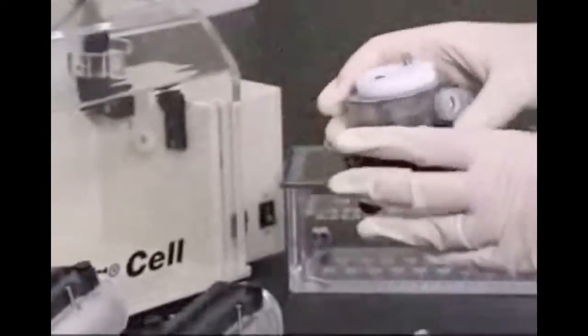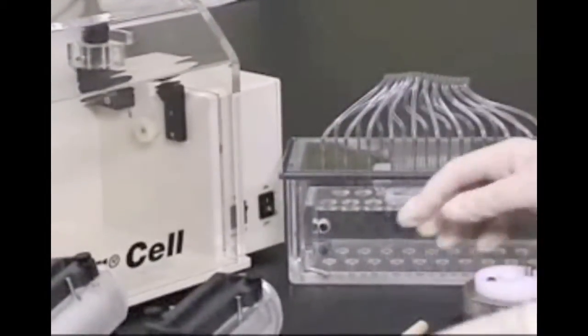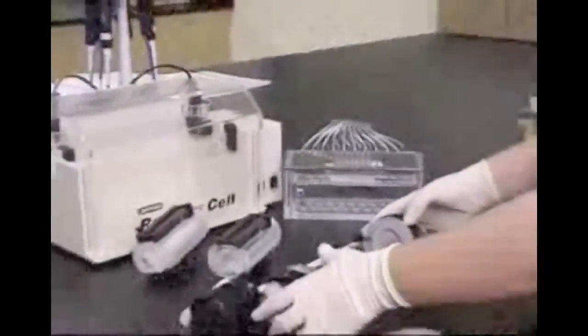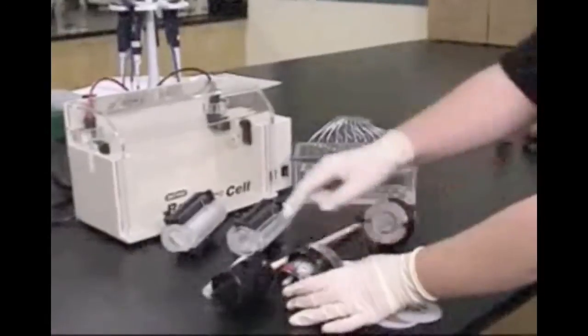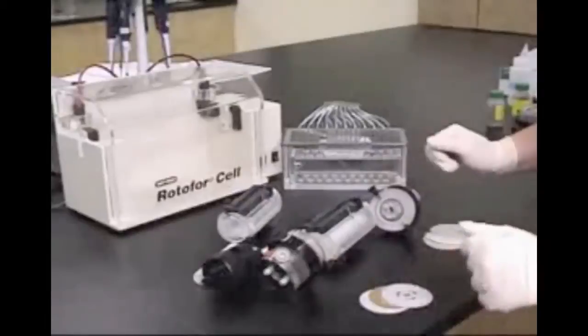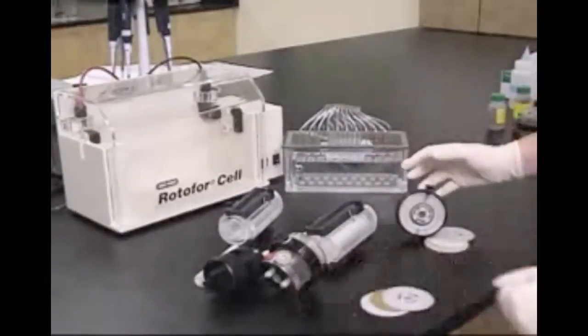The assembly procedure is identical for both the standard and mini Rotifor. First, the anode chamber is placed onto the cooling finger, followed by the focusing chamber, and the cathode chamber is added last. The cooling finger is then attached to a recirculating water chiller.